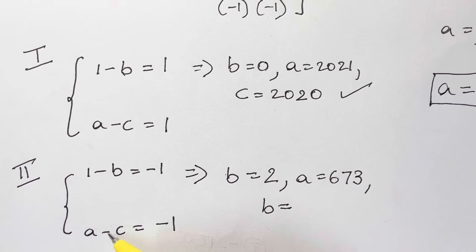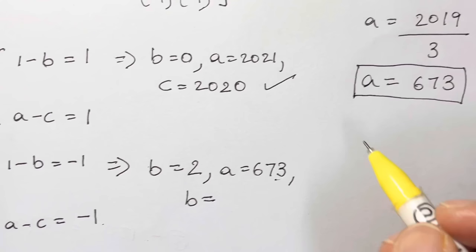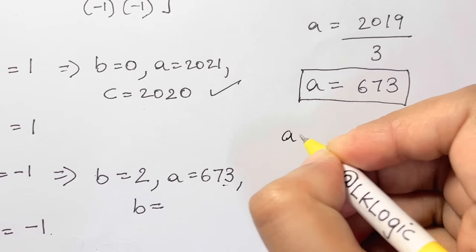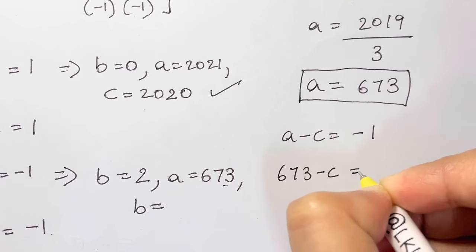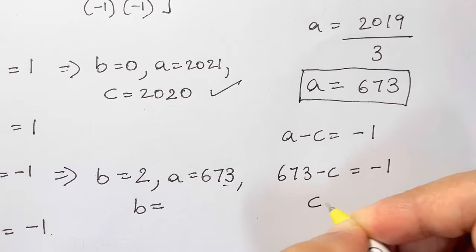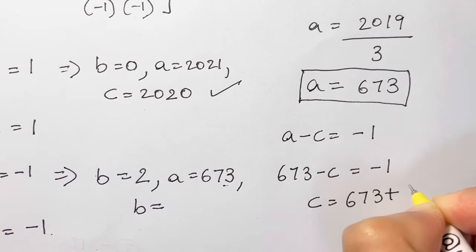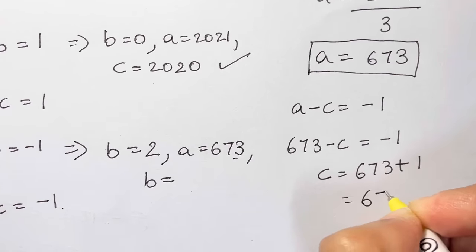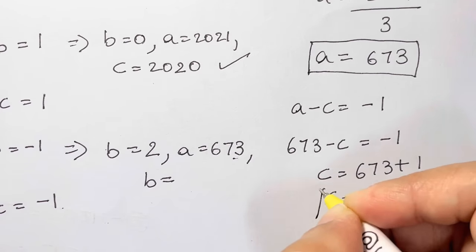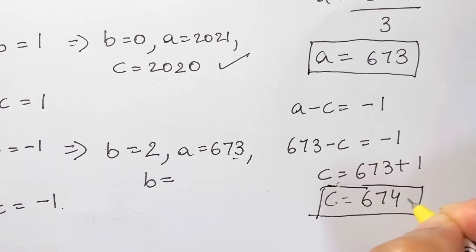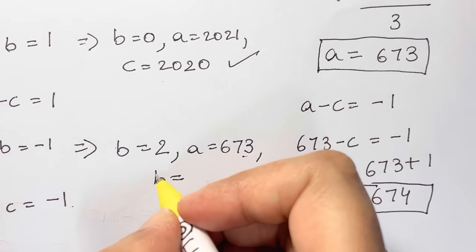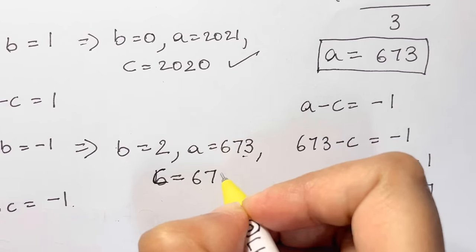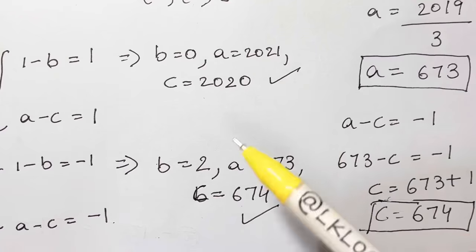We found a = 673. Now using (a minus c) = negative 1, we get c = 673 plus 1 = 674. So for Case 2: a = 673, b = 2, c = 674. That gives us two complete solutions.